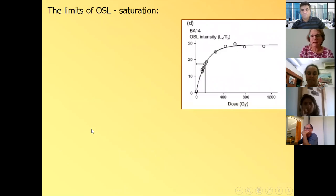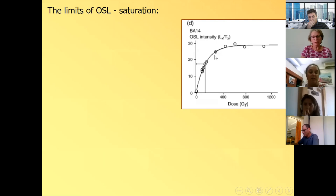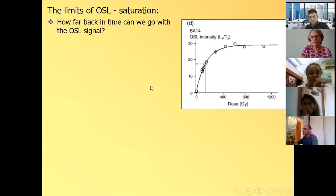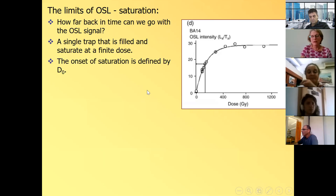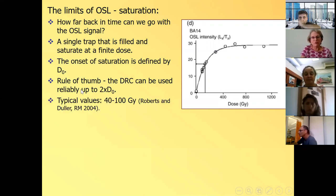So what is the limit of OSL? The limit is saturation. We have these traps, one trap, that is filled over time. And after some time, there are no more traps, no more dislocations, no more vacancies, and the signal stops growing. This is a signal intensity against dose, against radiation. It starts growing very nicely, and then it stops growing, and we call this saturation. So how far back in time can we go with this OSL signal? And the onset of saturation is defined by a number that's called D naught that we get from the fit of this curve.